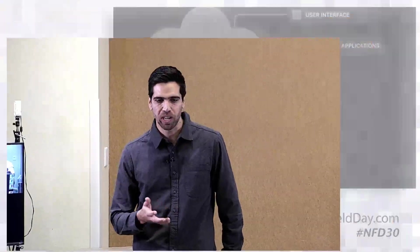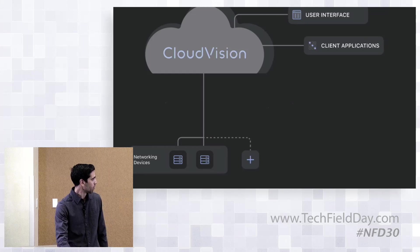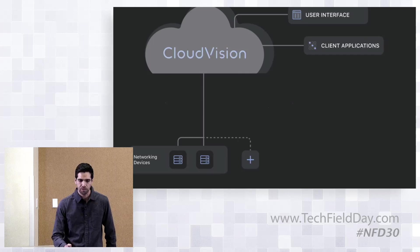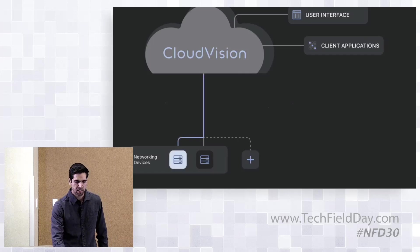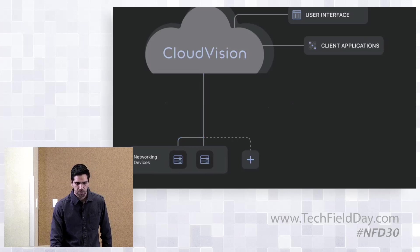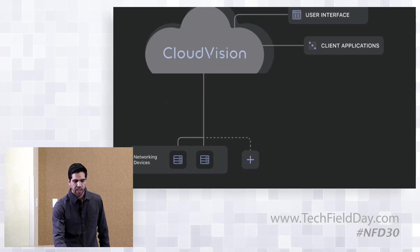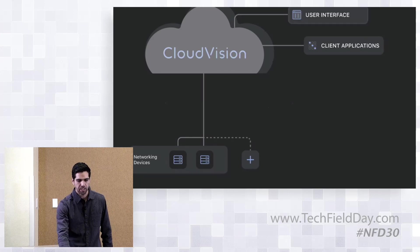At the highest level, CloudVision is a picture where we have a bunch of networking devices streaming state into CloudVision. It's deployed either on-premises or as a cloud service. It's processing this data, storing this data, analyzing it, and then exposing it to the user or to other applications.